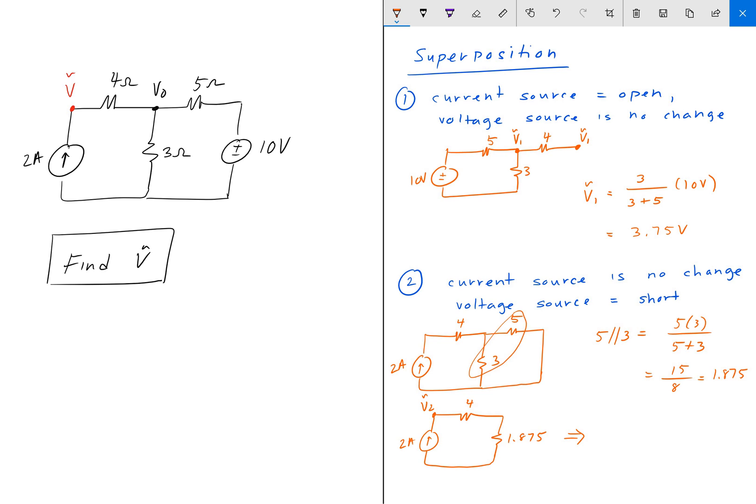The last step here, combine the 2 and get 5.875. And this is your V tilde 2.